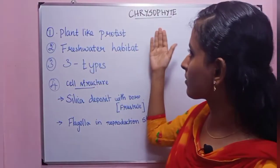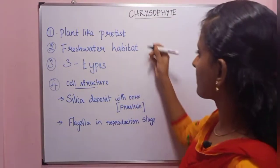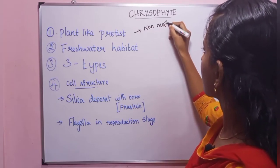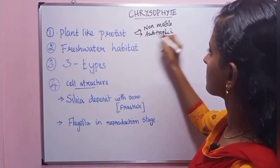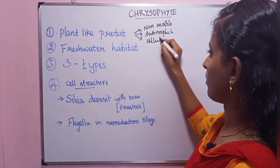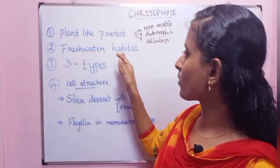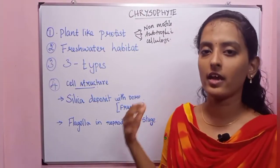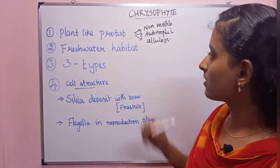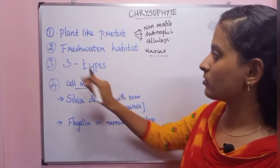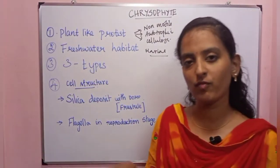Next character of chrysophytes: cell wall is made up of cellulose. Next is fresh water habitat. Some chrysophytes are also found in marine environments, but mostly in fresh water habitat. They are free-floating.